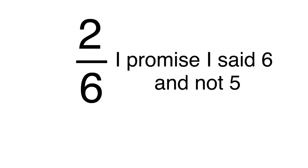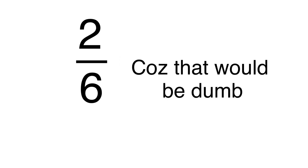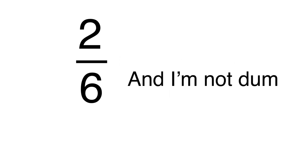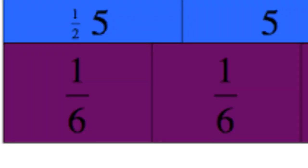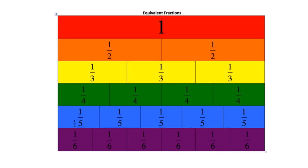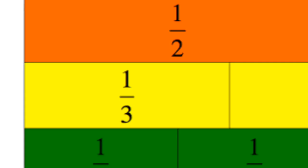Here's an example. So if I have 2 over 6, I could simplify 2 and 6 down to an equivalent of that. The lowest equivalent of 2 over 6 would be 1 third. I know, I'm a bit of a genius.